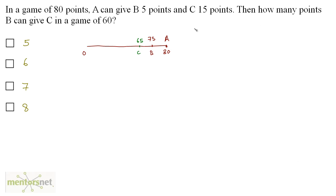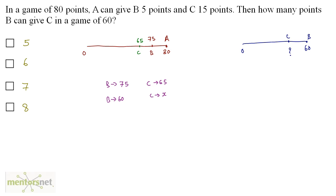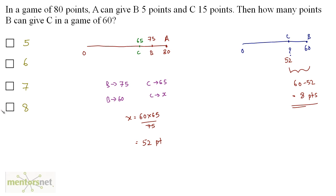We have been asked how many points B can give to C in a game of 60. Now the game is of 60, so we need to find how many points C has when B has 60 points. When B has 75 points, C has 65 points. So when B has 60 points, C has x = 60 times 65 divided by 75, which equals 52 points. The difference is 60 minus 52, which is 8 points — B can give C 8 points. Option D is the correct answer.